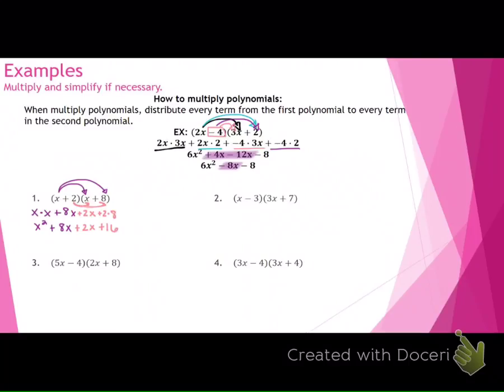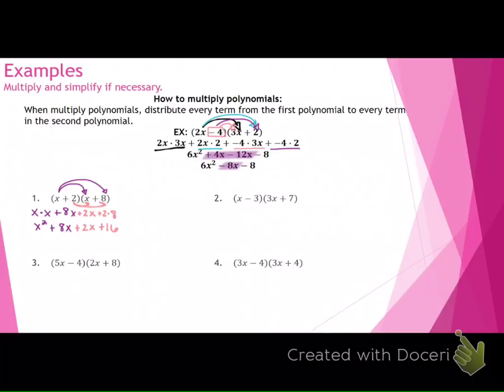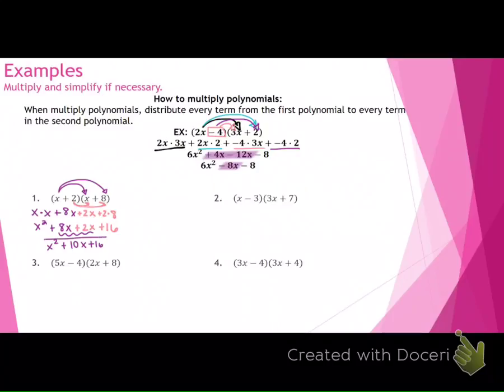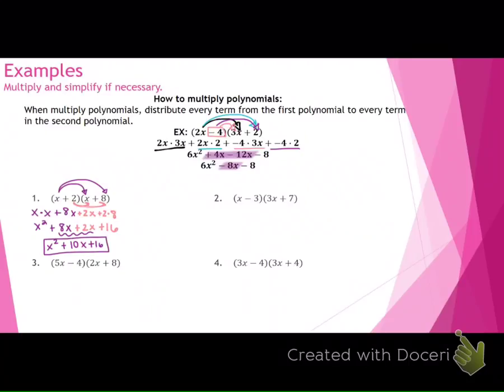So look at that there real quick. This is just what Emma told me to do. Do you see how she took everything from the first term, gave it to everything in the second, took everything from the second term to the second binomial? She combined those like terms. What would be 8x plus 2x? 10x. Good. So that would be your final answer. Does that make a little bit more sense now, Emma?